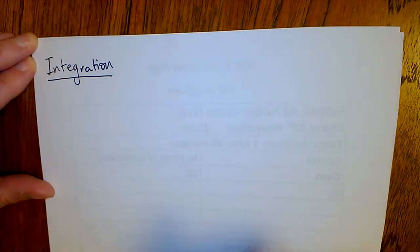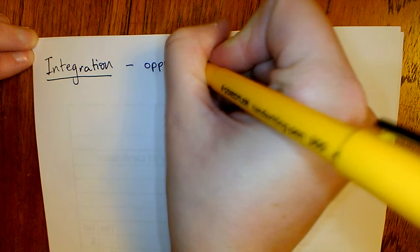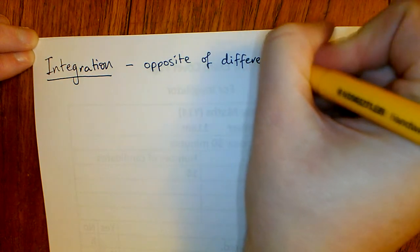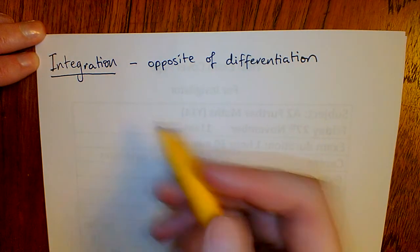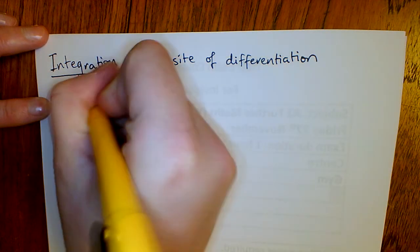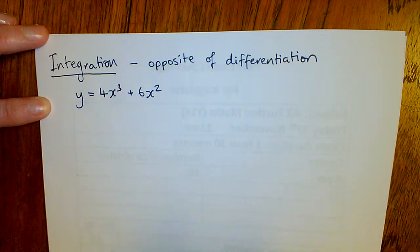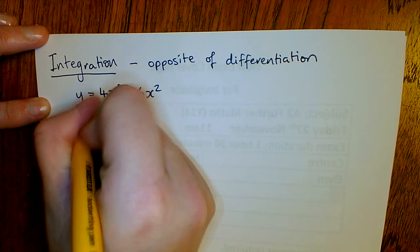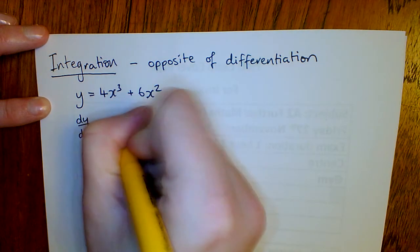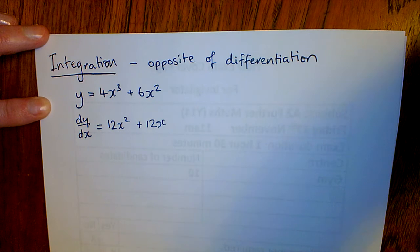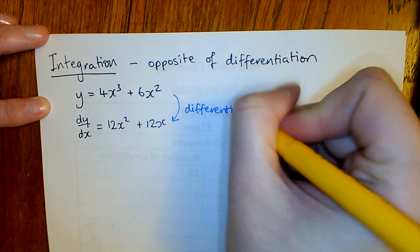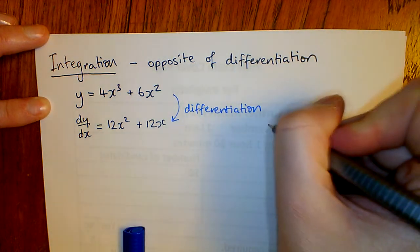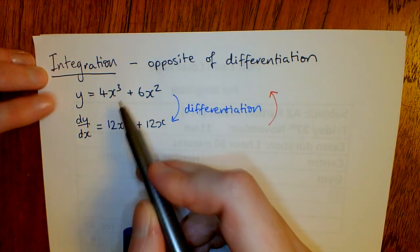We're going to look at integration. Integration is the opposite of differentiation — together they are called calculus. So if we had y equals 4x cubed plus 6x squared, we differentiate to get dy/dx equals 12x squared plus 12x. We want to find a way of going backwards: if we have dy/dx, how do we find y? That's called integration.